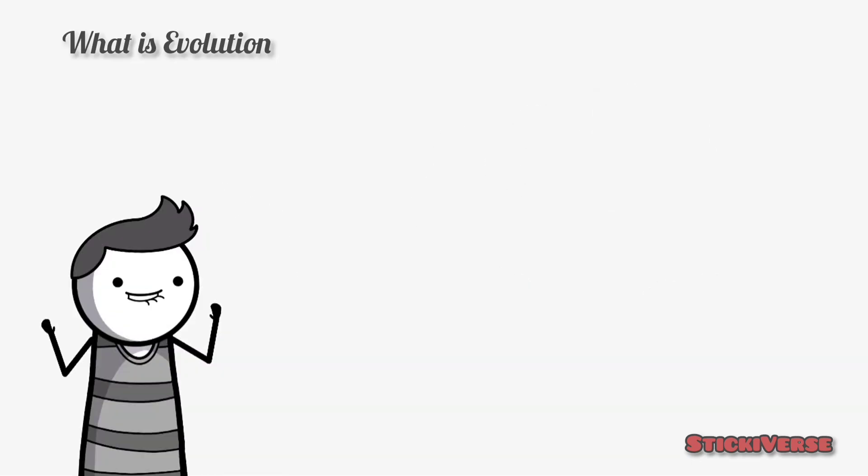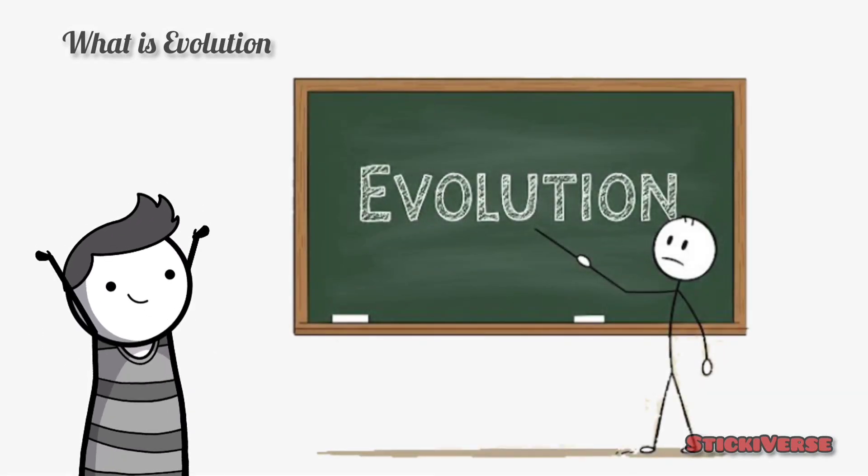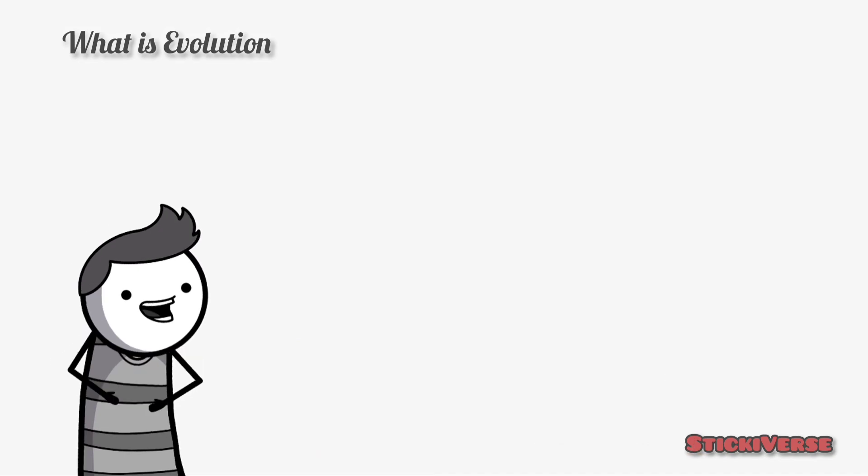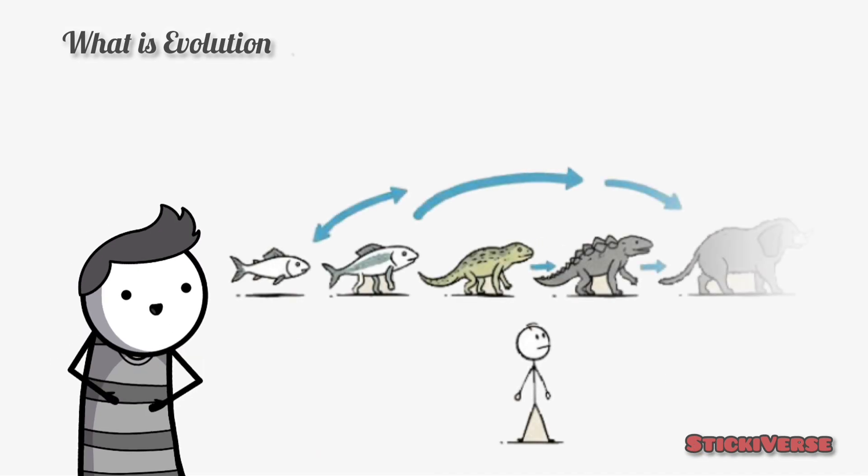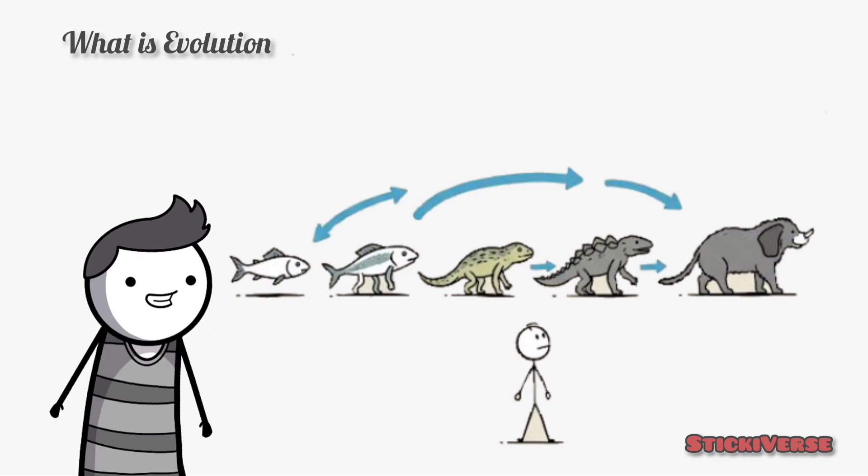Before we turn to the question of why they cannot disprove the theory of evolution, let's first briefly explain what the theory of evolution means. Evolution is the process in which species change over time due to genetic differences, better survival, and reproduction.